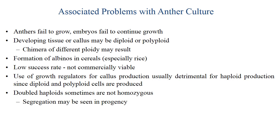Associated problems with anther culture: anthers fail to grow, embryos fail to continue growth. Developing tissue or callus may be diploid or polyploid, and chimeras of different ploidy may result. The major problems in in vitro culture are chimera formation and mosaicism. Formation of albino plants in cereals — albino is also a major problem especially in rice. Low success rate, not commercially viable. Use of growth regulators for callus production is usually detrimental for haploid production since diploid and polyploid cells are produced.